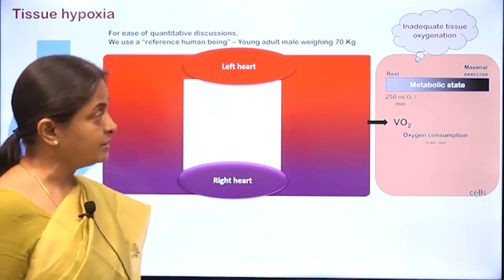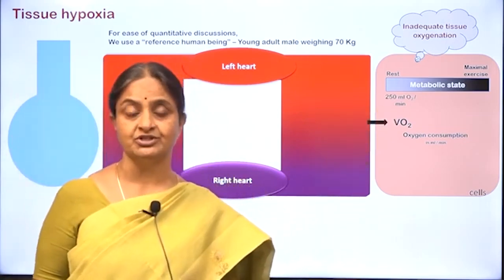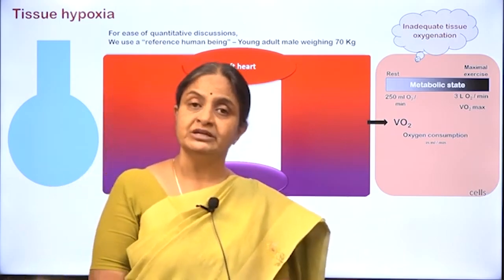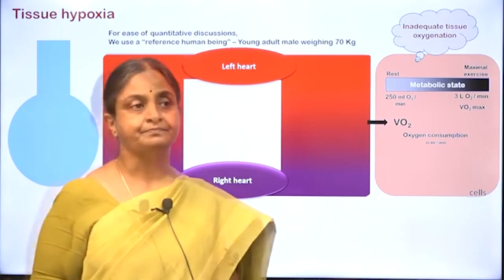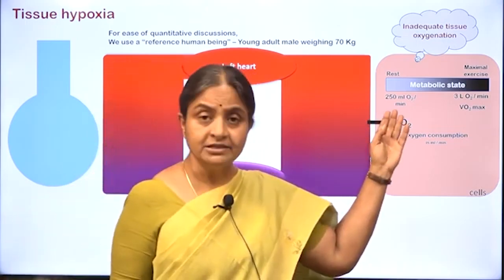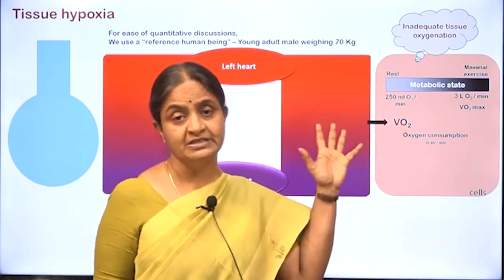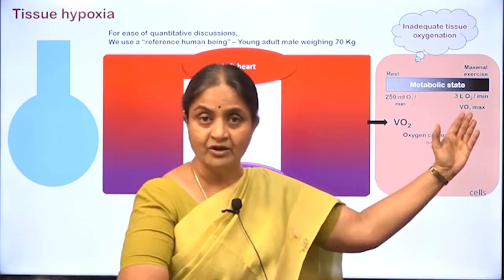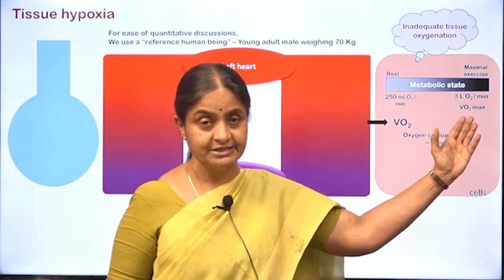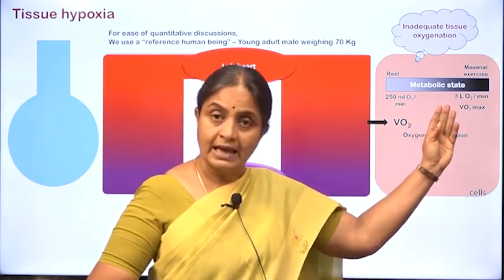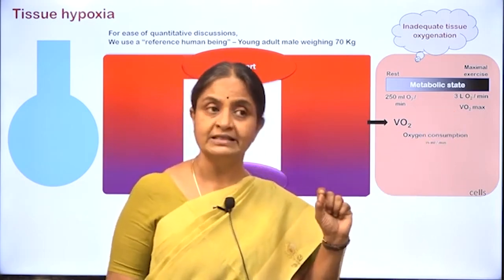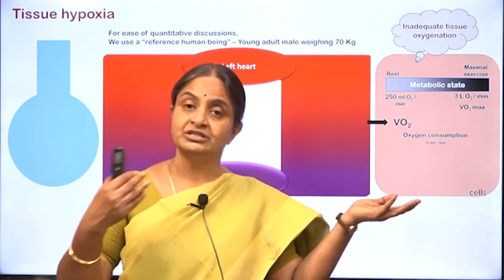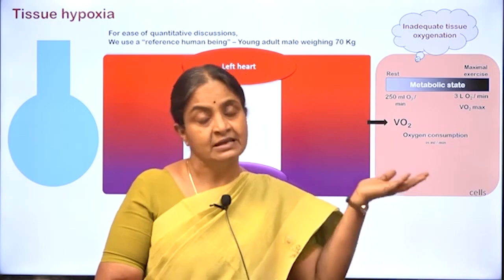In such a reference human being, resting oxygen consumption is about 250 milliliters per minute, whereas at the height of exercise it can go up more than 10 times, to nearly 2.8 to 3 liters per minute. The oxygen delivery mechanisms may be able to provide what is required at rest but not for higher grades of exercise. In such a person, tissue hypoxia will develop at higher levels of exercise — the person has exercise limitation because the oxygen delivery mechanism cannot meet demands at that level.